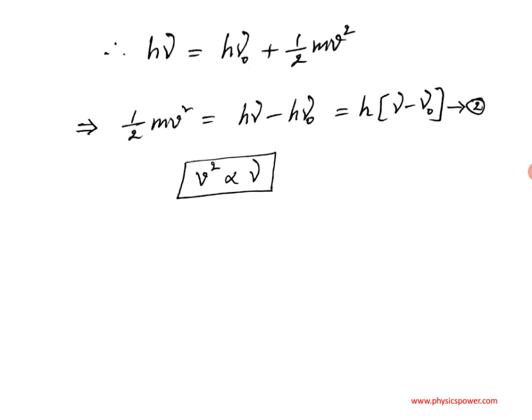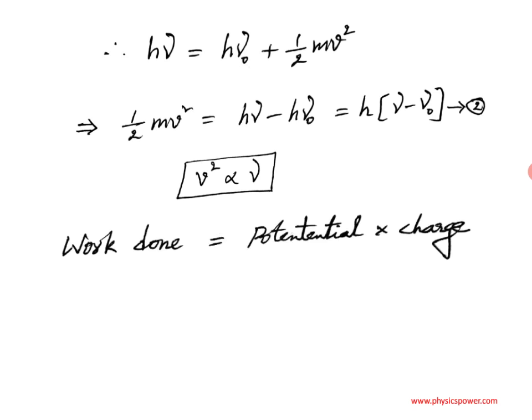In Einstein's photoelectric effect experimental study, the concept of stopping potential is used. Stopping potential is the negative potential applied to stop the fastest-moving electrons, bringing their kinetic energy to zero. Work done equals potential into charge, and by the work-energy theorem, work done equals the change in kinetic energy — from maximum to zero — so change in kinetic energy equals ½mv².